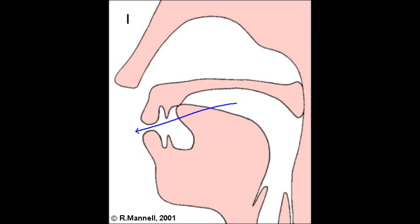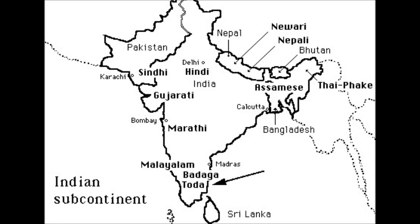Lateral fricatives are less common but they do appear in a variety of languages around the world. A lateral fricative is essentially the same as a fricative but the air passes out the side of the articulator rather than out the front. Here is an example from the Dravidian language Toda.